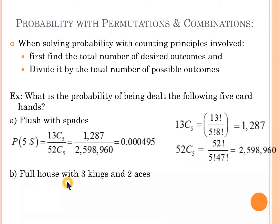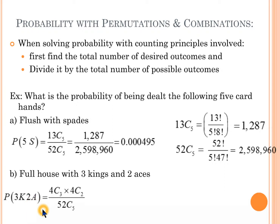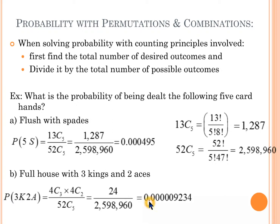What is the probability of a full house with three kings and two aces? There are four kings in a deck and we want three: 4 choose 3. There are four aces and we want two: 4 choose 2. Multiply those and divide by 52 choose 5 for the total five-card hands. The result is 0.00009234 — again a very small probability.